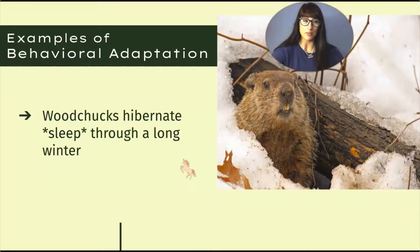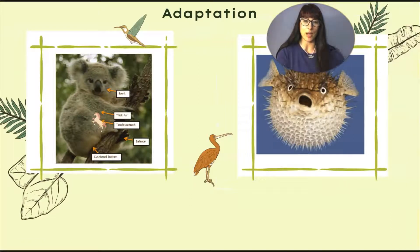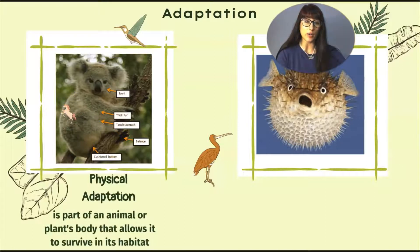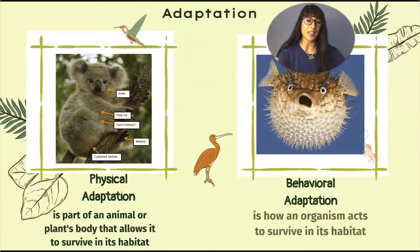Let's summarize. We learned about two types of adaptations: physical adaptation, which is the part of the body — of an animal or a plant — that allows it to survive in its habitat; and behavioral adaptation, which is how an organism acts, its behavior, what it does to survive in its habitat.